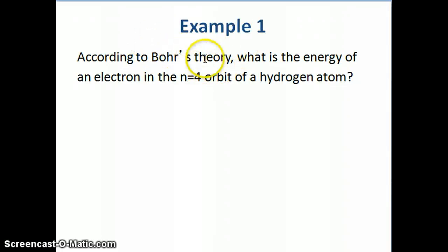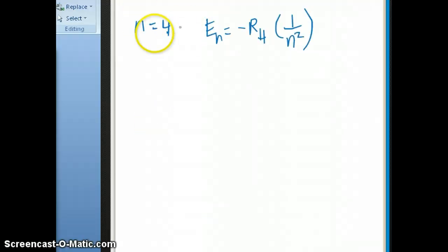In this case, it says, according to Bohr's theory, what's the energy of an electron in the n equals 4 orbit of a hydrogen atom? The question is n equals 4, and what you have to remember is Bohr gave this equation to help you calculate the energy of an electron for every energy level of every orbit.